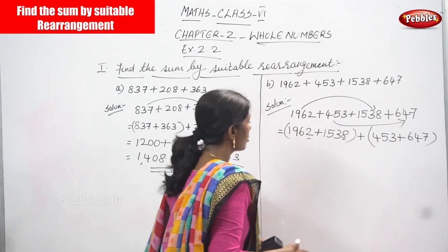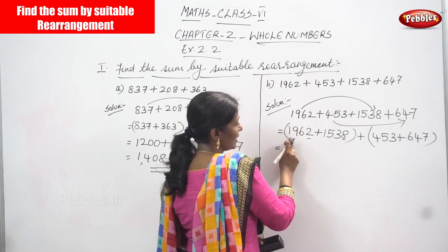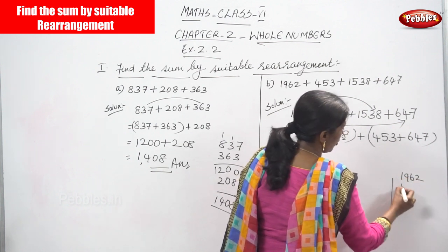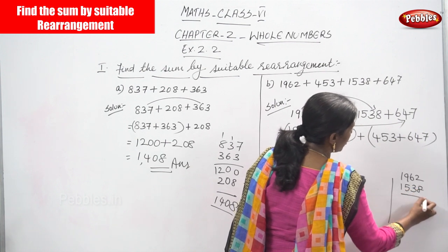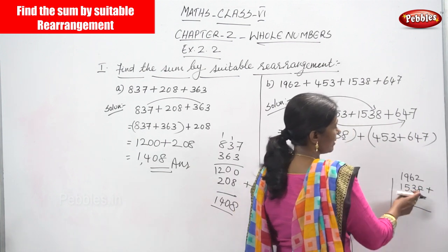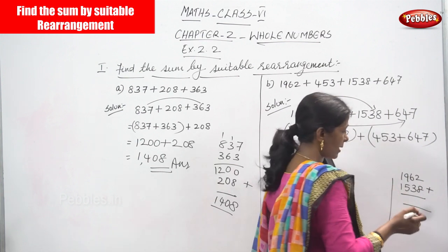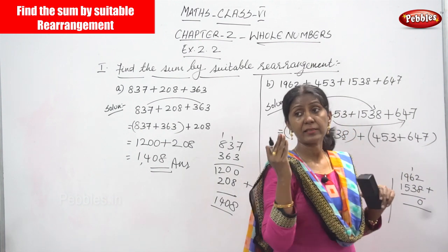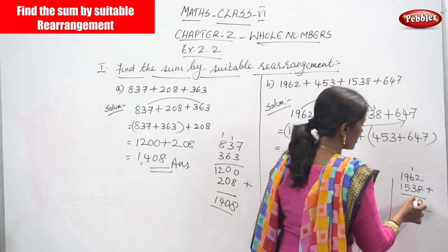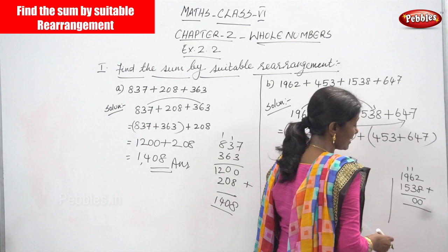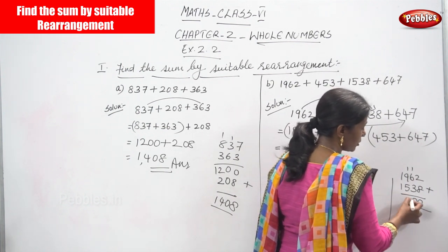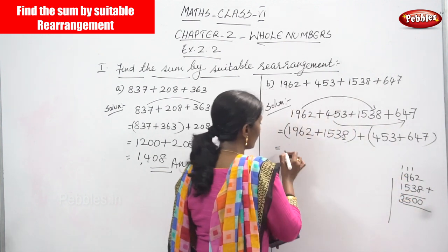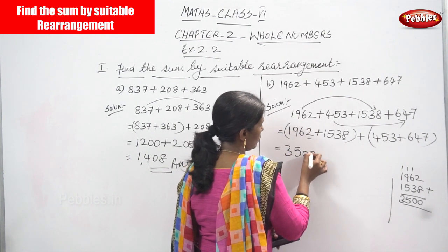Solving 1962 plus 1538: 2 plus 8 is 10, write 0 and carry over. 6 plus 1 is 7, 7 plus 3 is 10, write 0 and carry over. 9 plus 1 is 10, 10 plus 5 is 15, write 5 and carry over. 1 plus 2 plus 1 is 3. The answer is 3500.